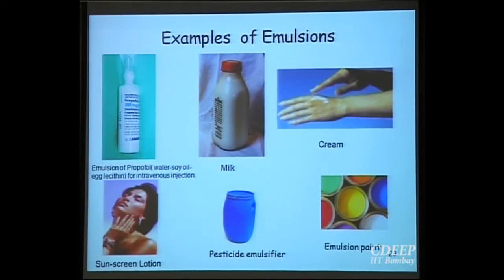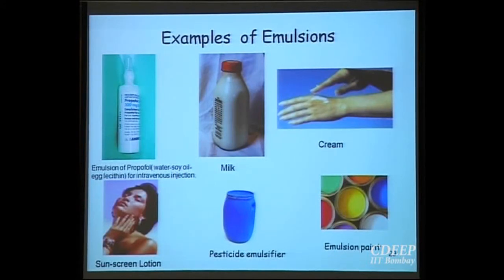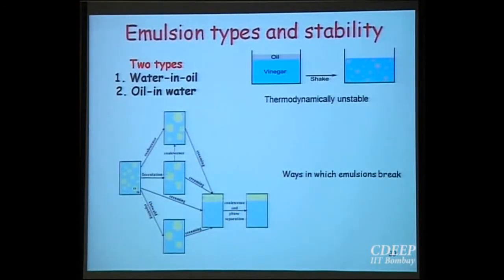Emulsions are used in drugs — for example, in intravenous injections you have emulsions, which are water-based so you can incorporate the drug and inject it into blood. Milk is an emulsion, cream is an emulsion, sunscreen lotion is an emulsion, and pesticides are oil-in-water emulsions. Emulsion paint is another example. Emulsions are basically unstable because creating more area increases energy, so the system tries to minimize energy by minimizing area. Destabilization can occur through coalescence, flocculation, or creaming.